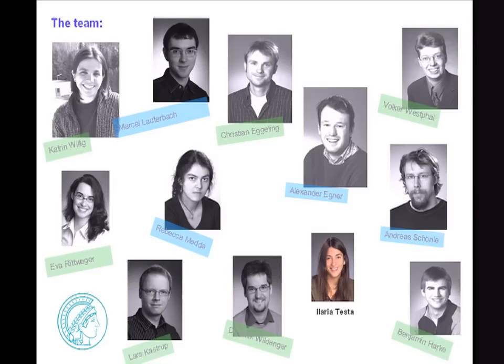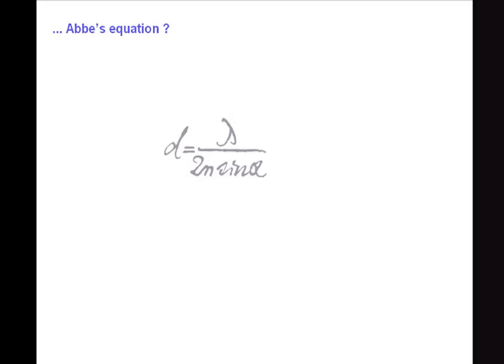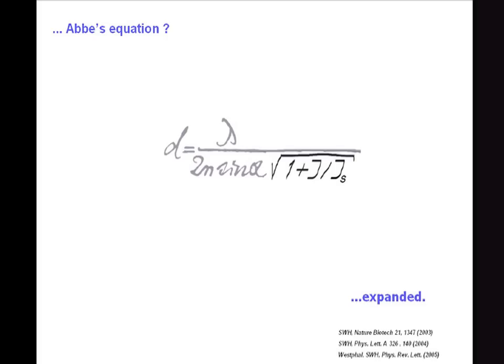After acknowledging the team who contributed significantly to this development, it's clear that Abbe's equation had a true meaning and is still relevant for many cases — there is no doubt about that. However, there are many cases in which this equation no longer holds, and we've seen that we can overcome the diffraction barrier and discern things at much closer distance. For STED and everything related to it, we can expand Abbe's equation by plugging in the square root factor. This resolution also scales with the wavelength because all beams are diffracted — we don't break diffraction, diffraction is still there, but we break the barrier set by diffraction. If I gets larger over IS, the denominator gets larger and delta R goes to zero.